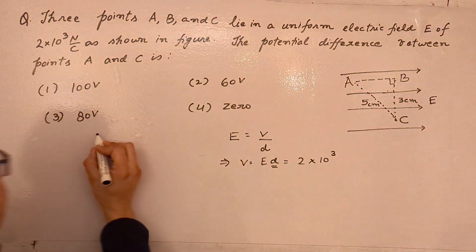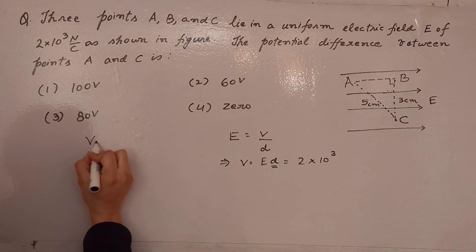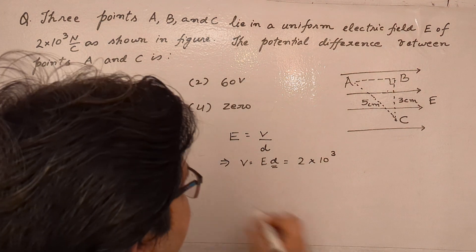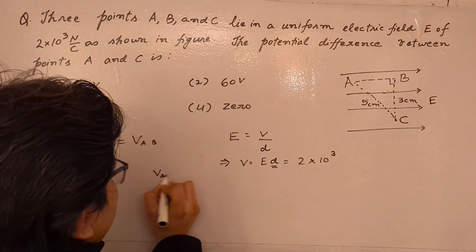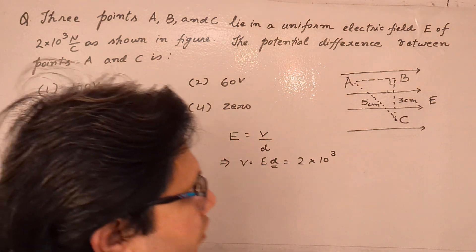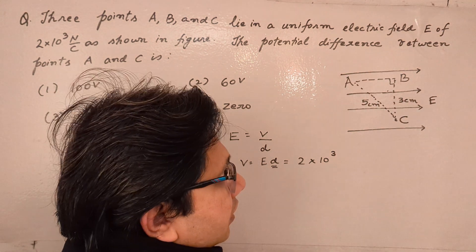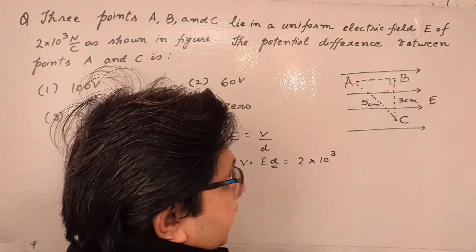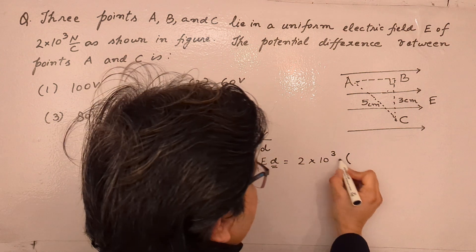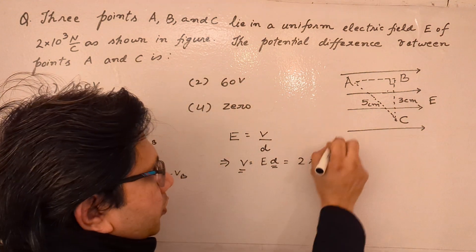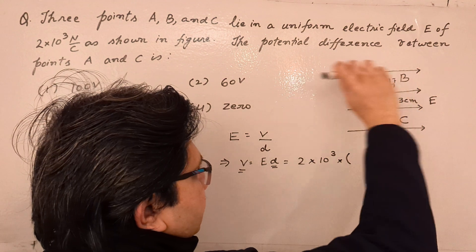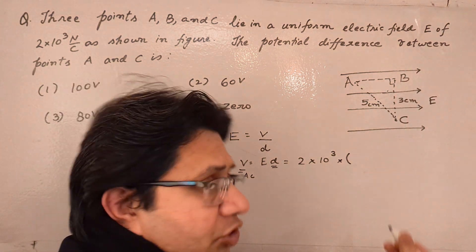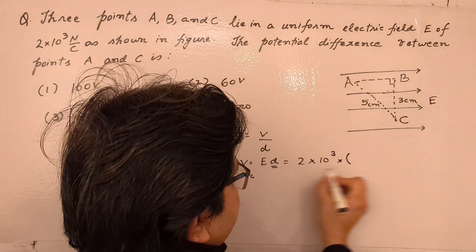Since B and C are at the same potential, calculating VAC is the same as calculating VAB, i.e., VA minus VB. It is also important to note that the direction of the electric field goes from higher to lower potential, so the potential at point A is greater than at point B. Therefore VAC comes out to be a positive value.